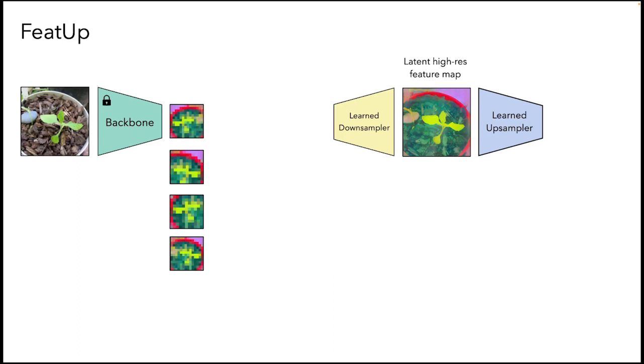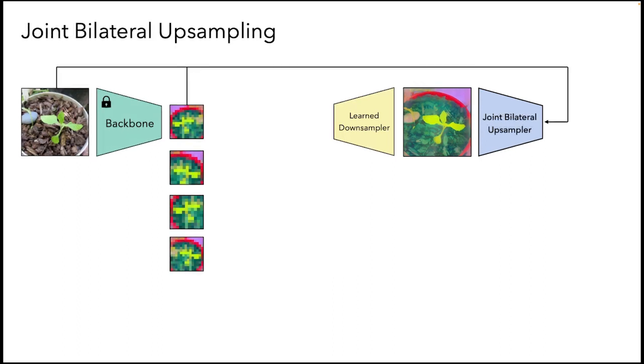We parametrize the upsampler in two different ways. First, FEEDUP can be parametrized as a joint bilateral upsampler where the high resolution input image guides the upsampling of our low resolution feature map. This JBU component is a feedforward module, making it fully trainable while plugged into an existing model.